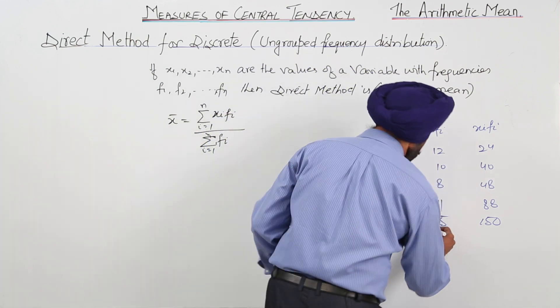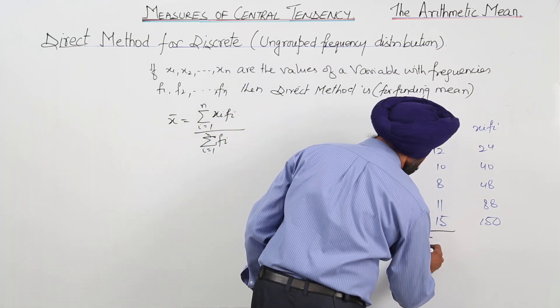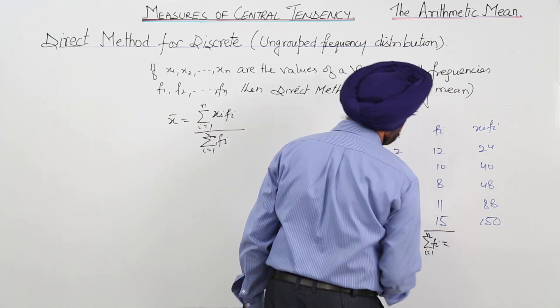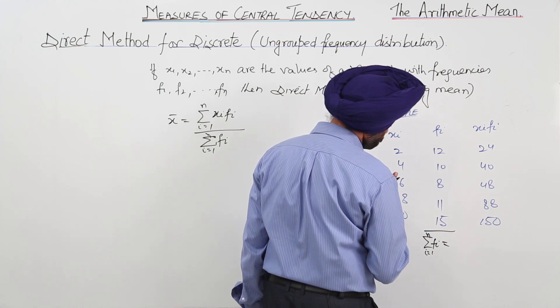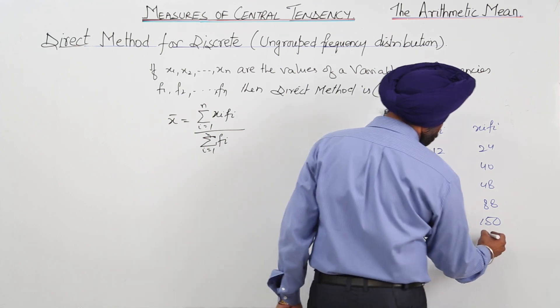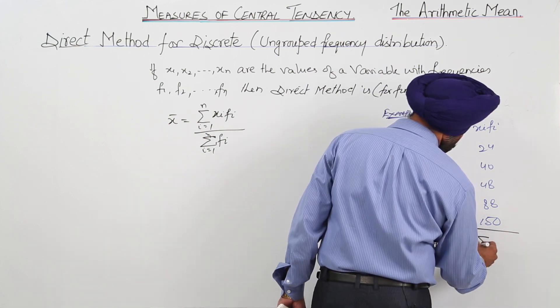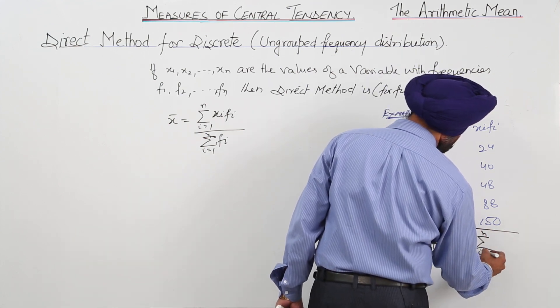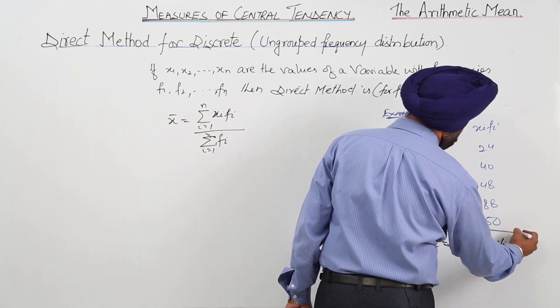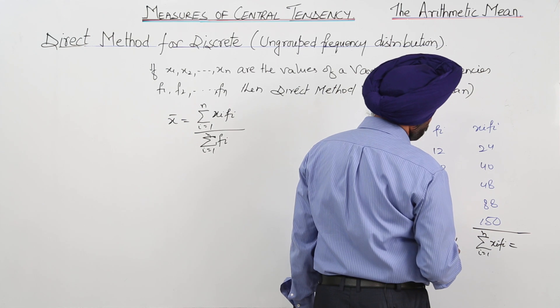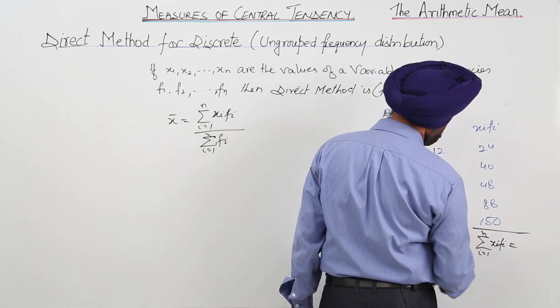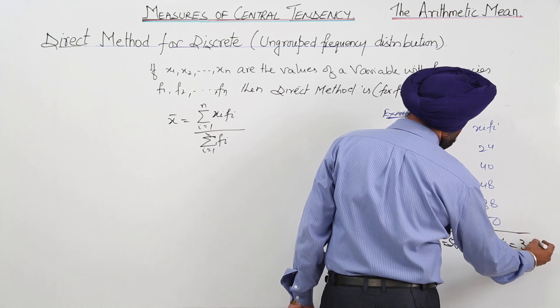Now summation for fi. Now this becomes 12 plus 10 plus 8 plus 11 plus 15. That is 56. And xi fi, now just add it, 350.